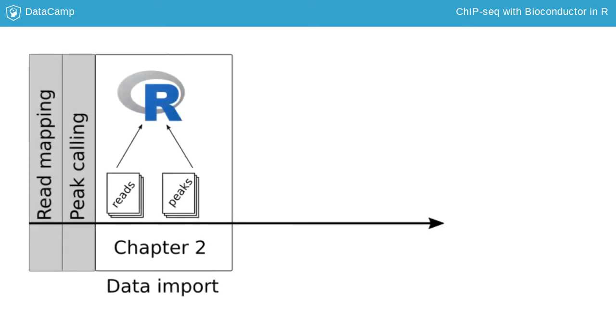While it is possible to perform read mapping and peak calling in R, typical ChIP-seq pipelines use dedicated tools for these steps. Following this practice, you will start the R workflow in Chapter 2 by importing mapped reads and peak calls into R.